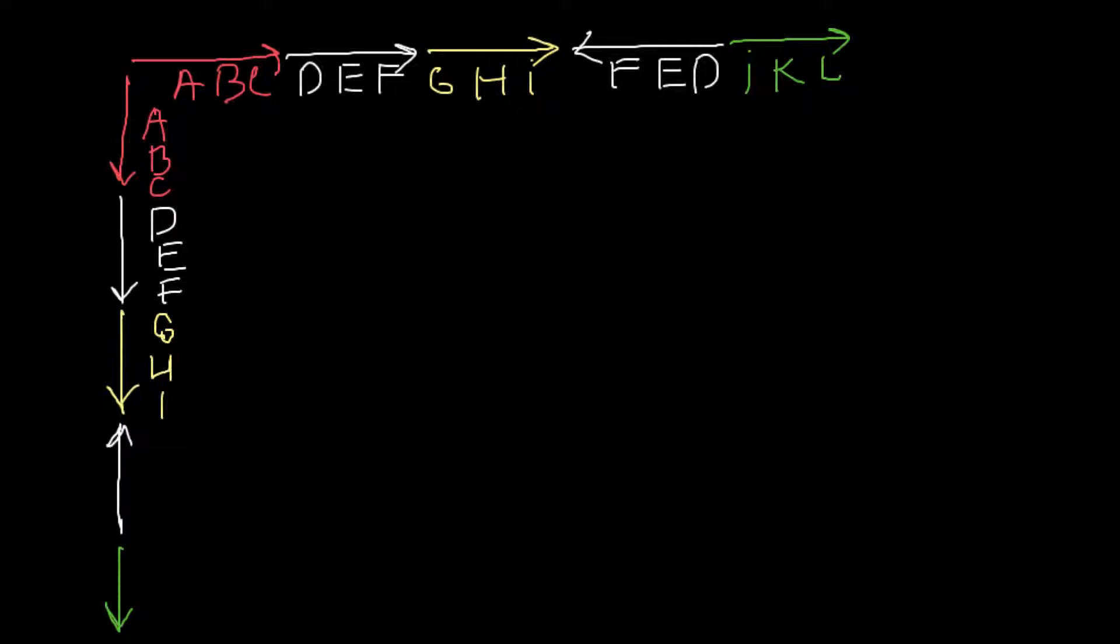And then once again, in reverse order, we would have D, E, and F. And then we have J, K, and L. Now we just did our matrix.